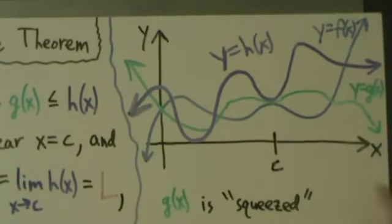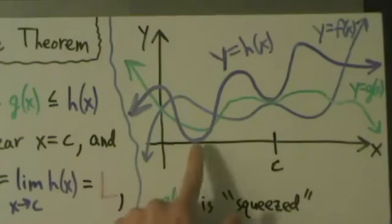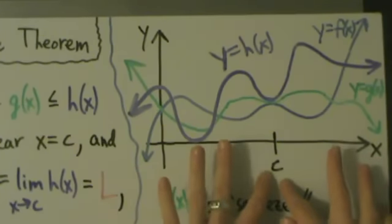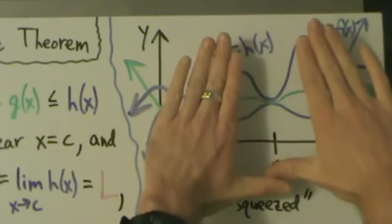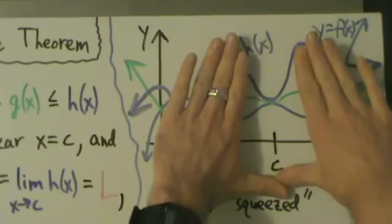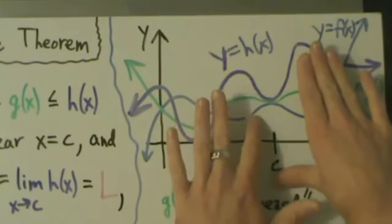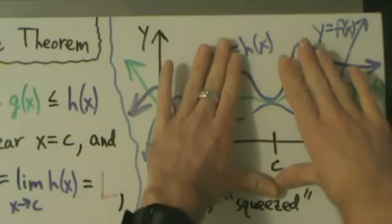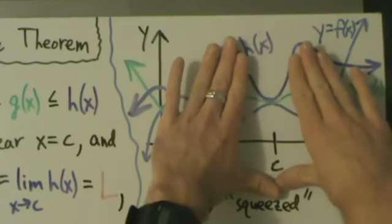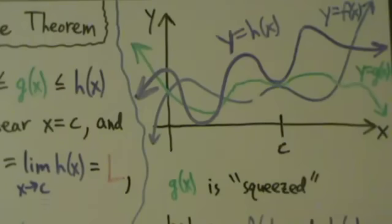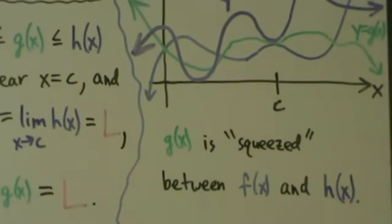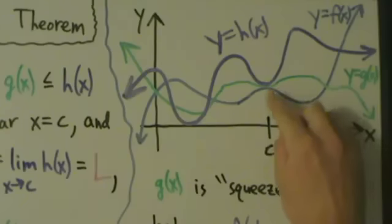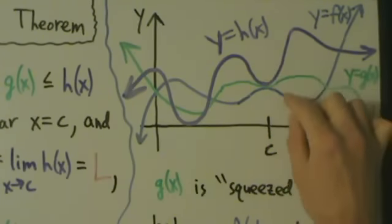Close to x = c, we can ignore all the other stuff out here — there's crazy stuff going on, crisscrossing and all that. But when we apply the squeeze theorem for the limit as x goes to c, all we care about is what happens around c. We notice that when x is close to c, f(x) is always on the bottom, g(x) is the green one always in the middle, and h(x), the purple one, is always on top. So g(x) is squeezed between f(x) and h(x), and because of that, if f and h have the same limit as x goes to c, then g(x) must also have that same limit, because it is squeezed or pinched or sandwiched between f and h.